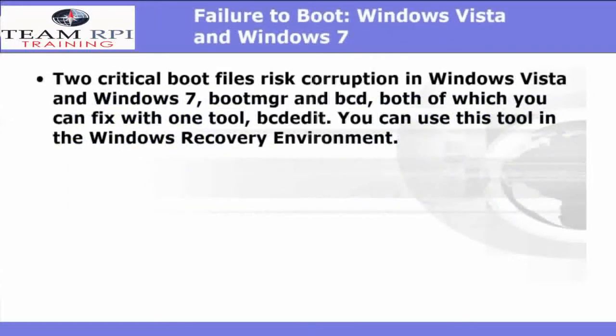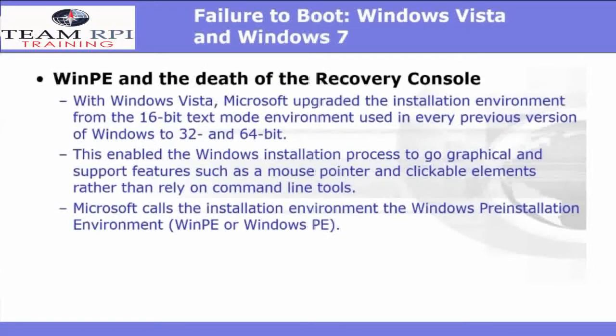For a failure to boot in Windows Vista and Windows 7, there are two critical boot files that risk corruption: they are the boot manager and the BCD. Both of which you can fix with one tool called BCDEdit. You can use this tool in the Windows recovery environment. With Windows Vista, Microsoft upgraded the installation environment from the 16-bit text mode environment used in previous versions like Windows XP, and enabled the Windows installation process to go to a full graphical presentation. Microsoft calls this installation environment the Windows Pre-installation Environment, or WinPE.